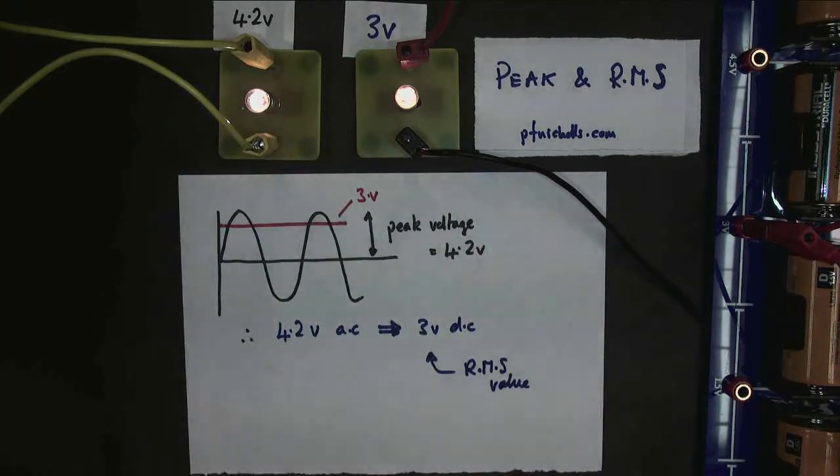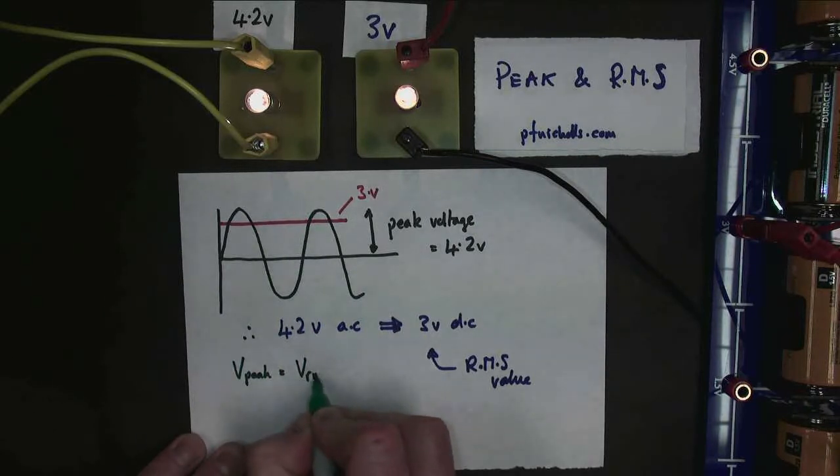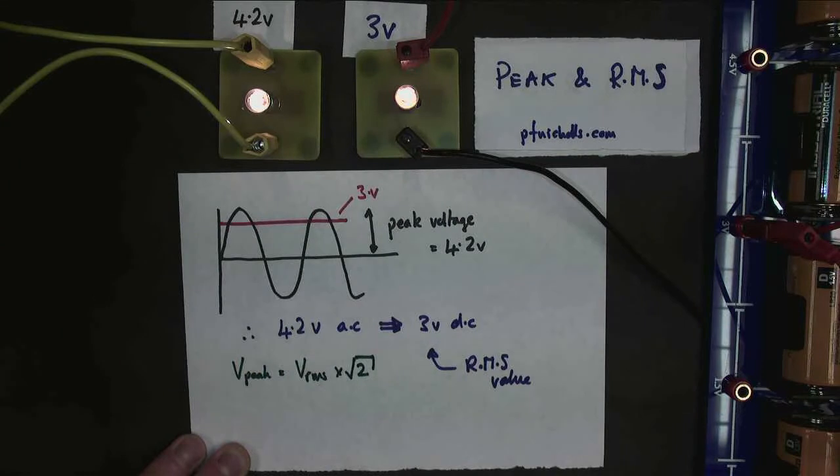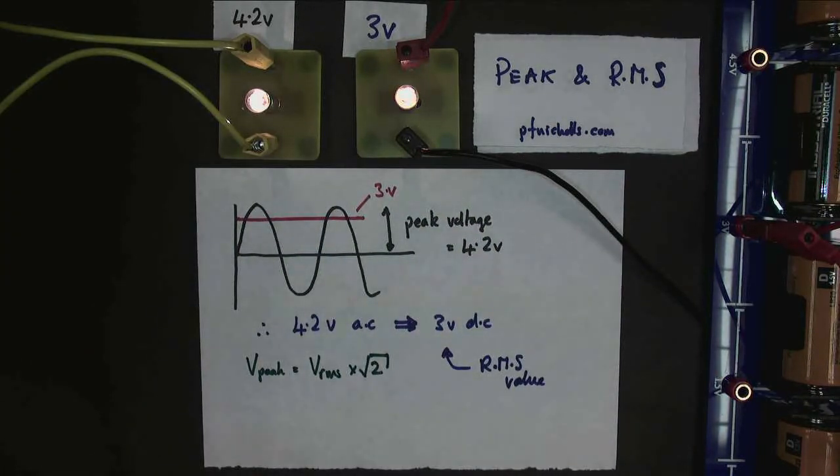And the equation that links them together is quite straightforward. We should be able to find that the peak voltage is equal to the RMS voltage times by the square root of 2, as long as we're using a sine wave. If you use a square wave, it's different. So let's try out those values and see if they actually work.